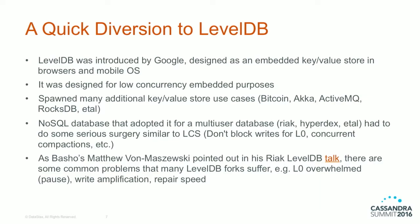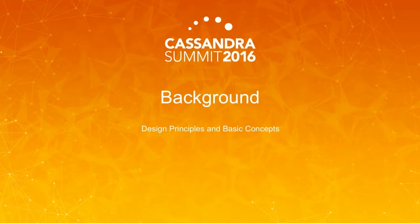LevelDB originally was part of the Chromium project — an embedded browser database — so it has that lineage. If you look at the spec and design, it wasn't designed for highly concurrent databases. That means everybody who has implemented a LevelDB-type implementation into their database, whether RocksDB or others, has had to do a lot of surgery that wasn't part of the core spec. There's actually a good talk by a RocksDB engineer on YouTube about the trade-offs they encountered. That's the basic background of LevelDB and why we've encountered some of these problems implementing it in Cassandra.